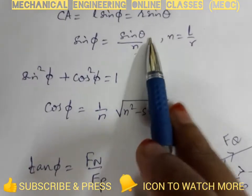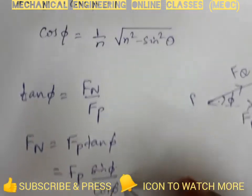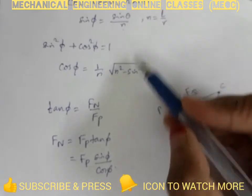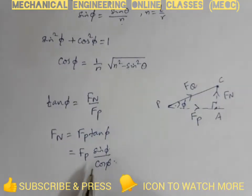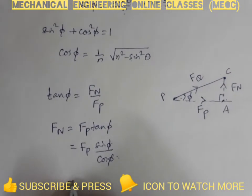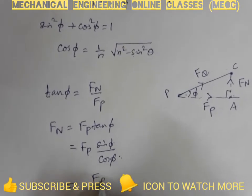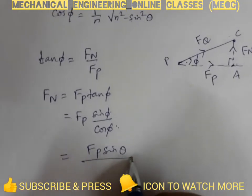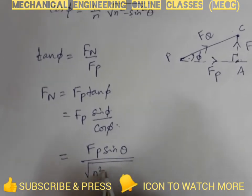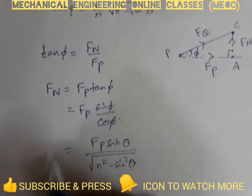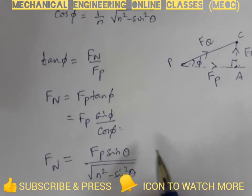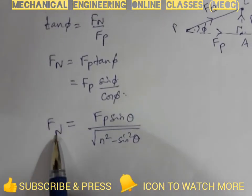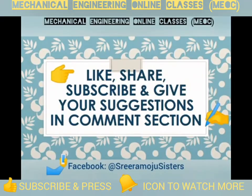fn can be written as fp tan phi, or fp sine phi by cos phi. We know sine phi in terms of theta as sine theta by n, and we also know cos phi in terms of sine theta. Substituting sine phi and cos phi, we have fn as fp sine theta whole divided by root over n square minus sine square theta. This is fn, the piston side thrust.